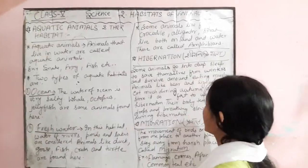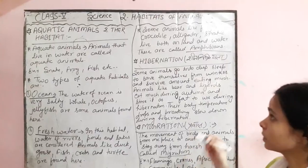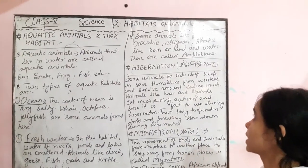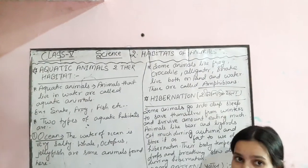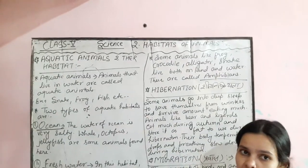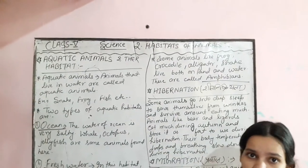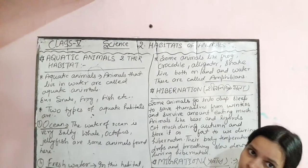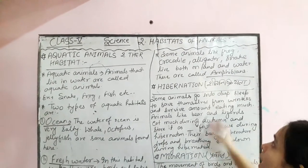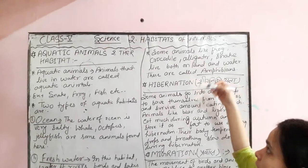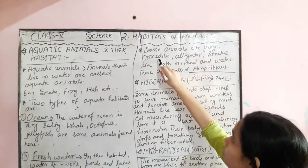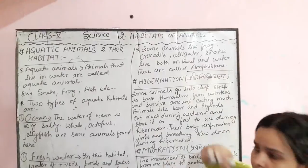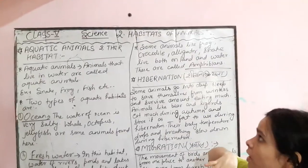Another topic is amphibians. Amphibians are animals which can live both in water and on land. Examples include frogs, crocodiles, alligators, snakes, etc.